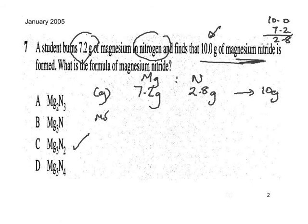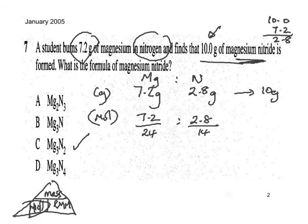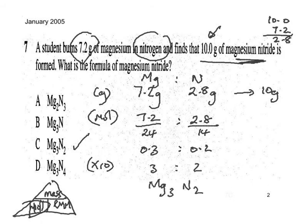Now we convert grams to moles by dividing the mass by the relative atomic mass. For magnesium: 7.2 divided by 24 gives 0.3 moles. For nitrogen: 2.8 divided by 14 gives 0.2 moles. Multiplying both sides by 10 gives a ratio of 3 to 2, so the formula is Mg₃N₂.